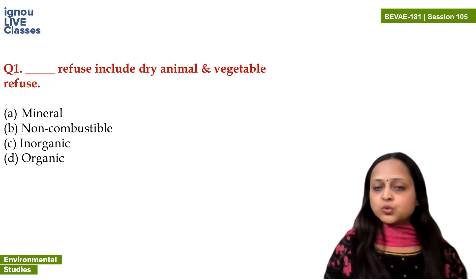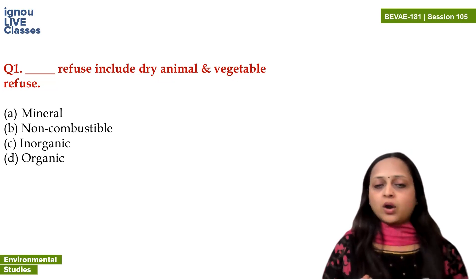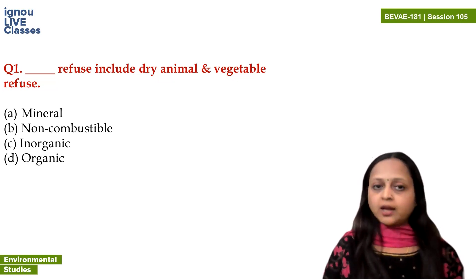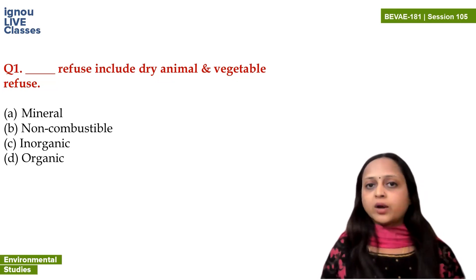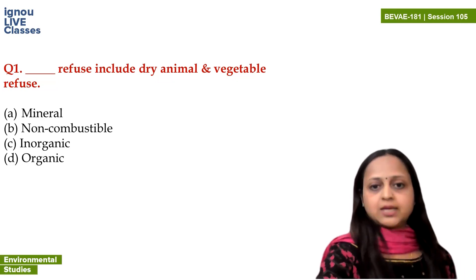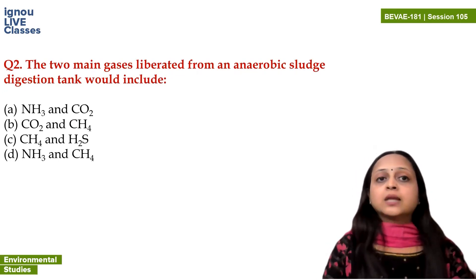So this refuse, which includes animal and vegetable refuse, we call it organic waste — organic refuse. So the answer is D. I hope it is clear to you.